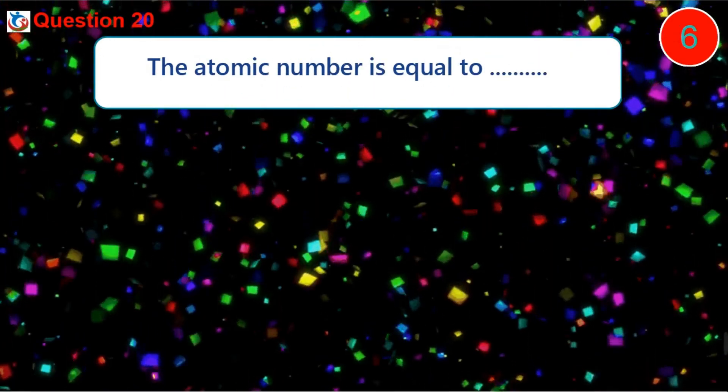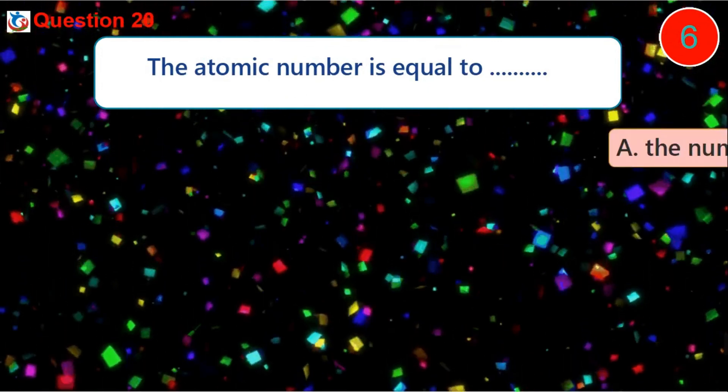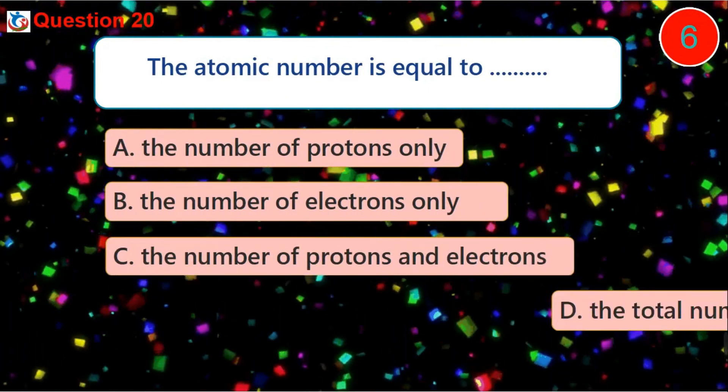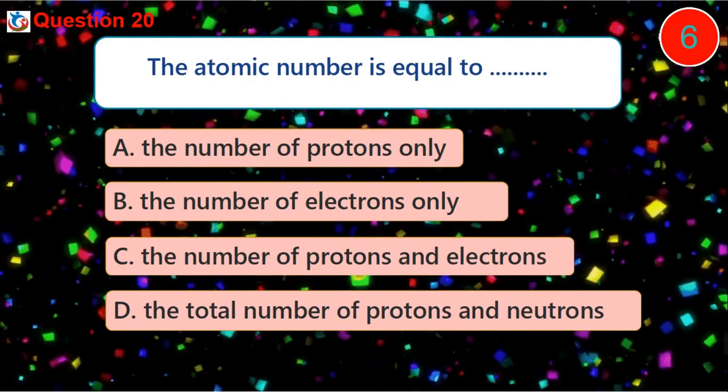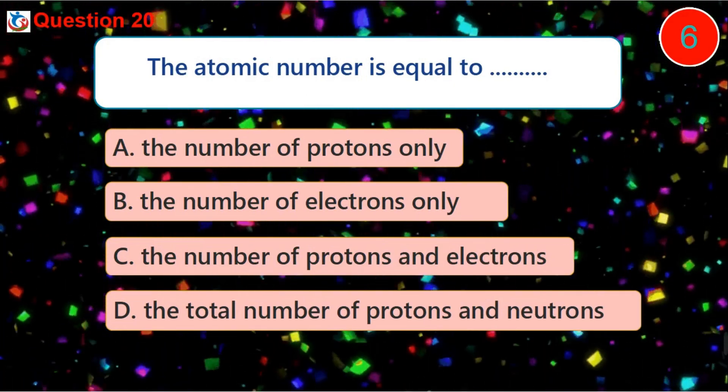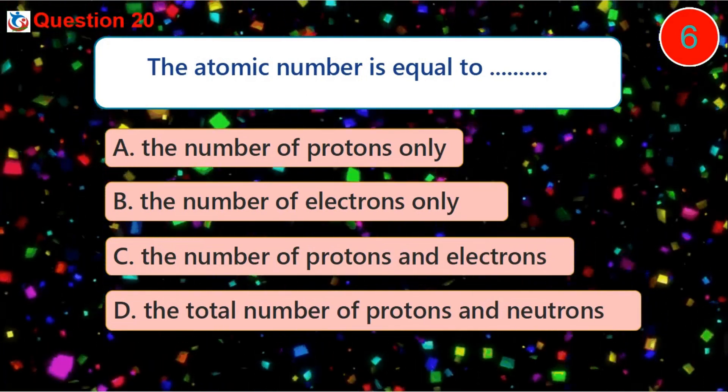Question 20. The atomic number is equal to dash. A. The number of protons only B. The number of electrons only C. The number of protons and electrons D. The total number of protons and neutrons.